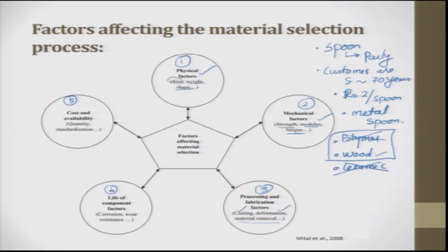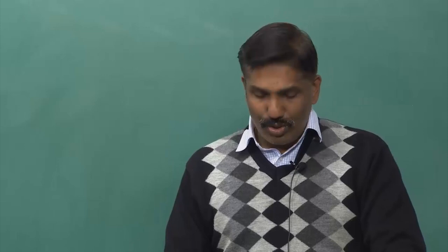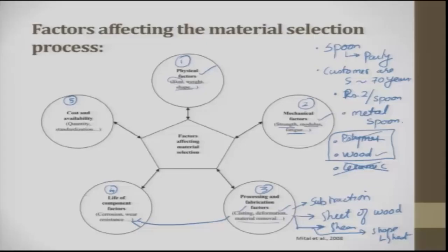Now I decide a process for making wood spoons. When I talk about wood, one process is subtractive machining. Another is taking a sheet of wood, pressing it, shearing it, and giving it a shape by heat to get the impression of a spoon. The processing route is completely different from what was originally considered. Moving to the life factor — wood spoon can withstand corrosion and wear resistance, especially for use-and-throw. Cost and availability: wood is available and standard things can be manufactured, so it fulfills the requirement.